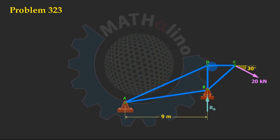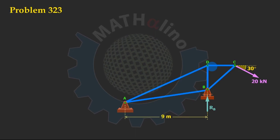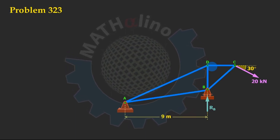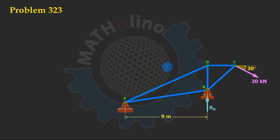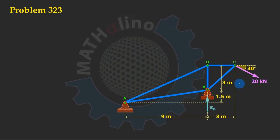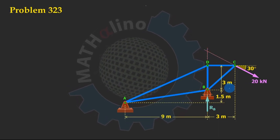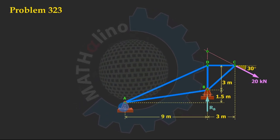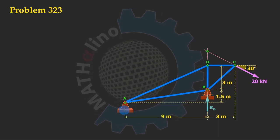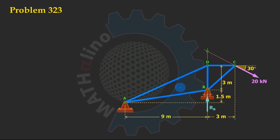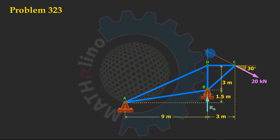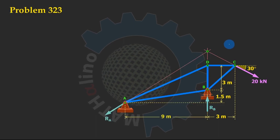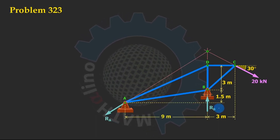This principle was mentioned in a previous video — the link is given above. The principle states: if we have three non-parallel forces in equilibrium, they are always concurrent — they will always meet at one point only. The reaction at B and the 20 kN force clearly meet at one point. According to our principle, the line of action of the reaction at A must also pass through that same point.